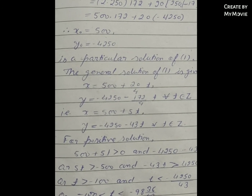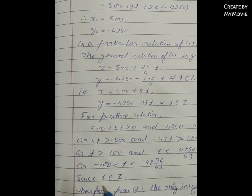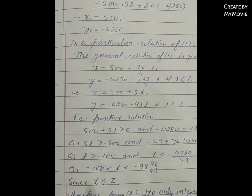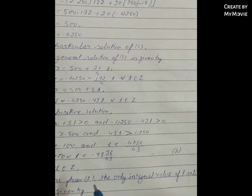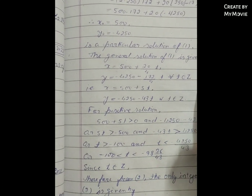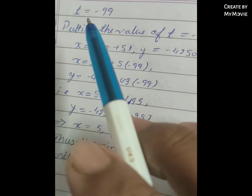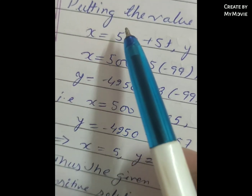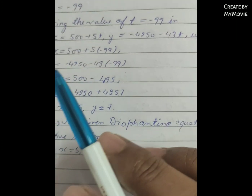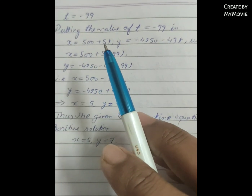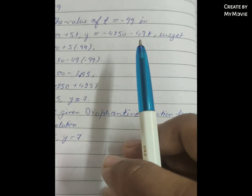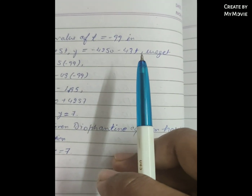Since t belongs to ℤ, from equation 2 the only integer value satisfying the condition is t = −99. Putting the value t = −99 in x = 500 + 5t and y = −4250 + 43t.